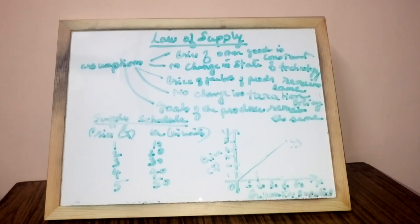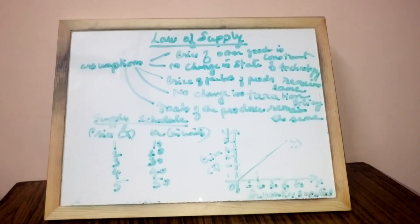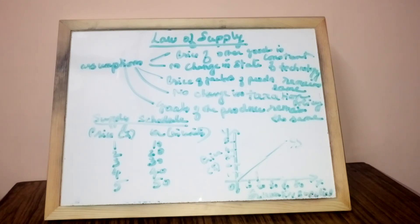The supply curve slopes upward showing quantity supplied rises with price, but in some cases this positive relationship may not hold true. One exception is future expectations: if sellers expect a fall in price, they will sell more even at a low price. However, if they expect the price to rise in future, they reduce supply to sell later at a higher price.